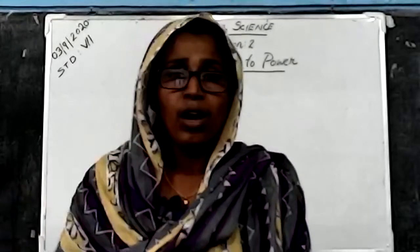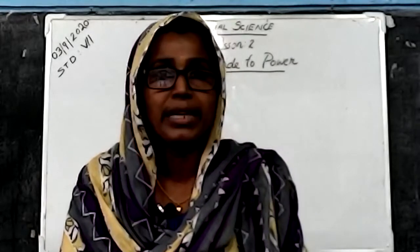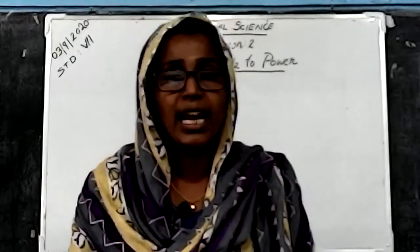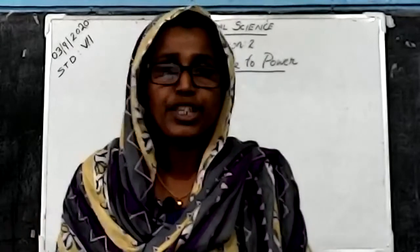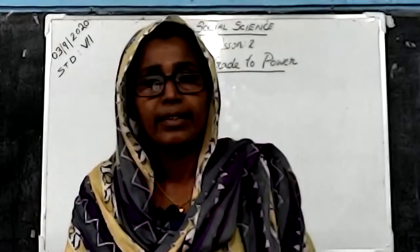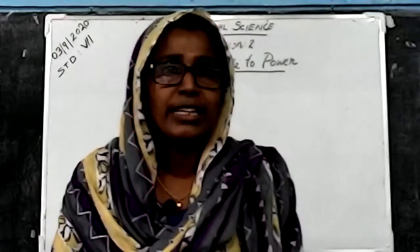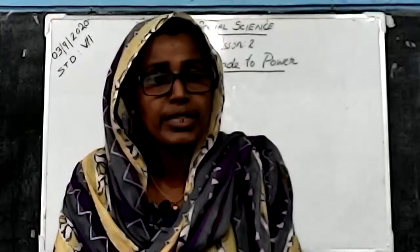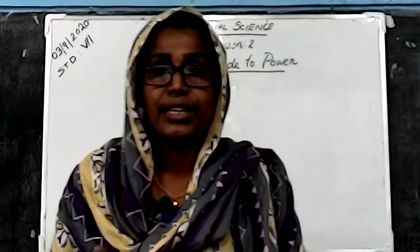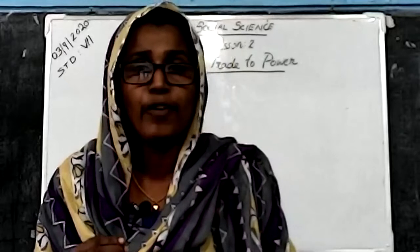Finally, the English East India Company owned the entire Bengal under their rule. Now we are going to learn about the English East India Company's reign expansion. The word 'reign' means rule or Rajya. They expanded their reign in two ways: first through treaties or wars, and second through legislation.